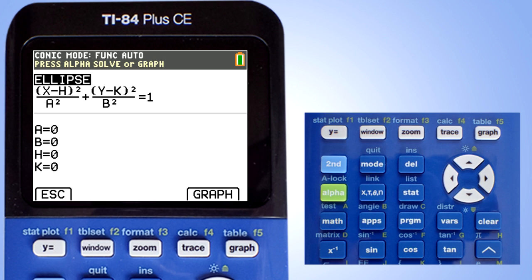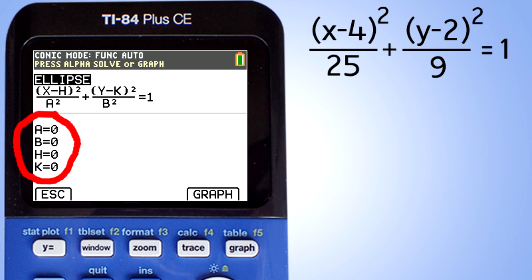This screen appears. To graph the ellipse, we need to know A, B, H, and K from the equation of the ellipse. For our equation, we will use X minus 4 squared divided by 25 plus Y minus 2 squared divided by 9 equals 1.